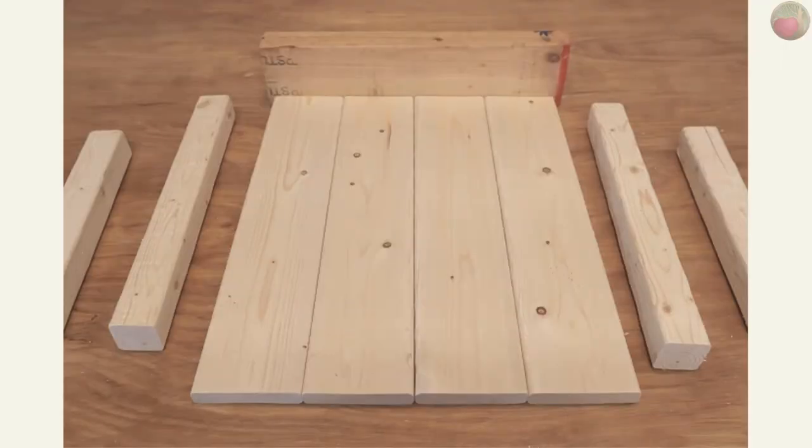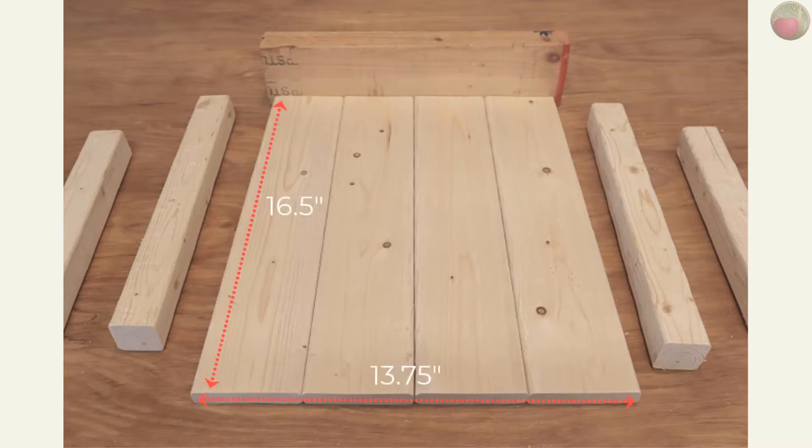Okay, let's start with the seat. Lay out your 1x4s side by side, butt one side of the ends against another board to keep them square, and then take your final measurements. Mine was 16.5 inches by 13.75 inches.